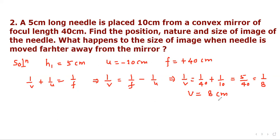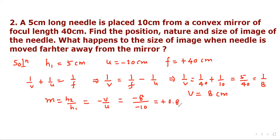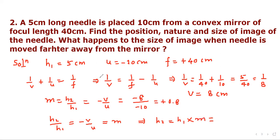The magnification m = −v/u = −8/(−10) = 0.8, which is positive and less than 1, so the image is diminished. The size of the image h2 = h1 × m = 5 × 0.8 = 4 cm.